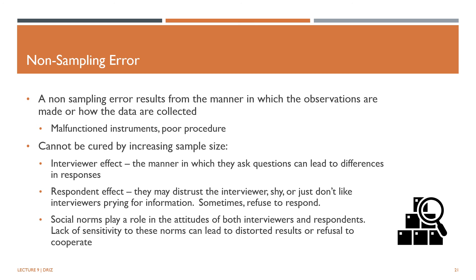Respondent effect: respondents have their own reasons for providing the responses they provide. They may distrust the interviewer, want to show their status, or simply be shy or dislike interviewers prying for information. Sometimes they refuse to respond, and if lies are superficially plausible, they may not be picked up at all. Social norms play a role in the attitudes of both interviewers and respondents. Lack of sensitivity to these norms can at best lead to distorted results, at worst to altercations or outright refusal to cooperate. For instance, sending a Malay interviewer to survey Indian squatters can arouse deep suspicion, and in some conservative cultures, male interviewers may not be able to interview female respondents.